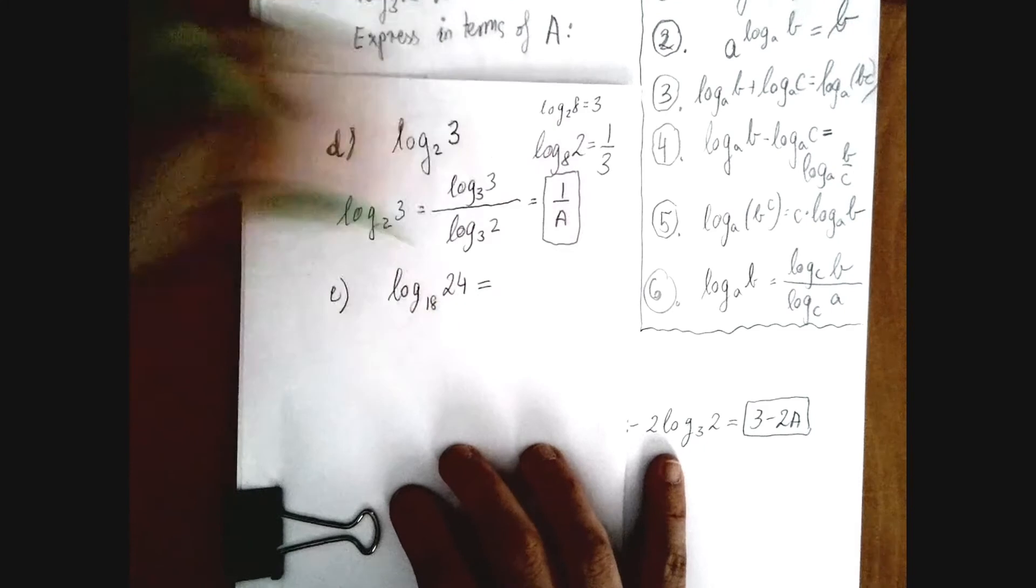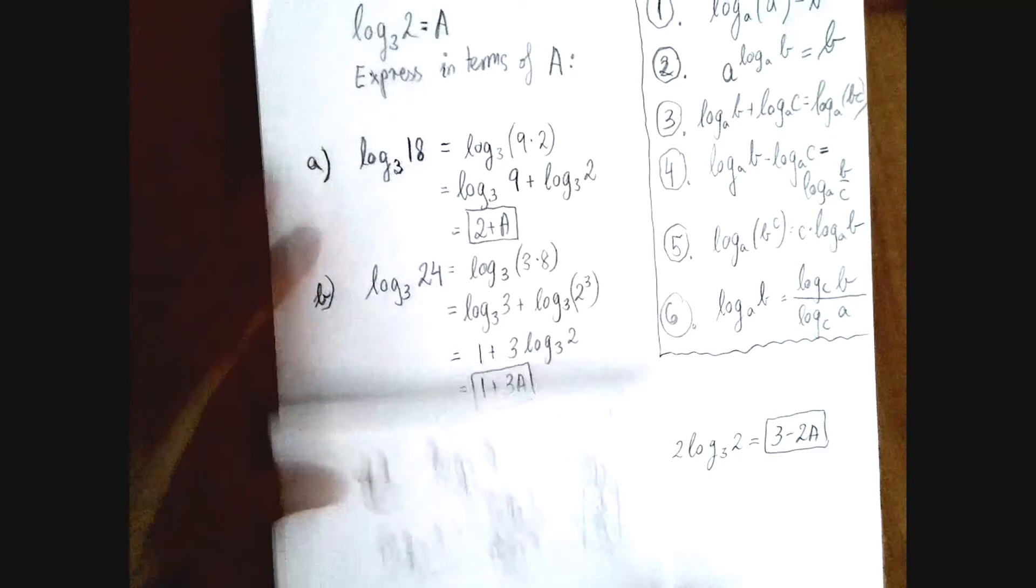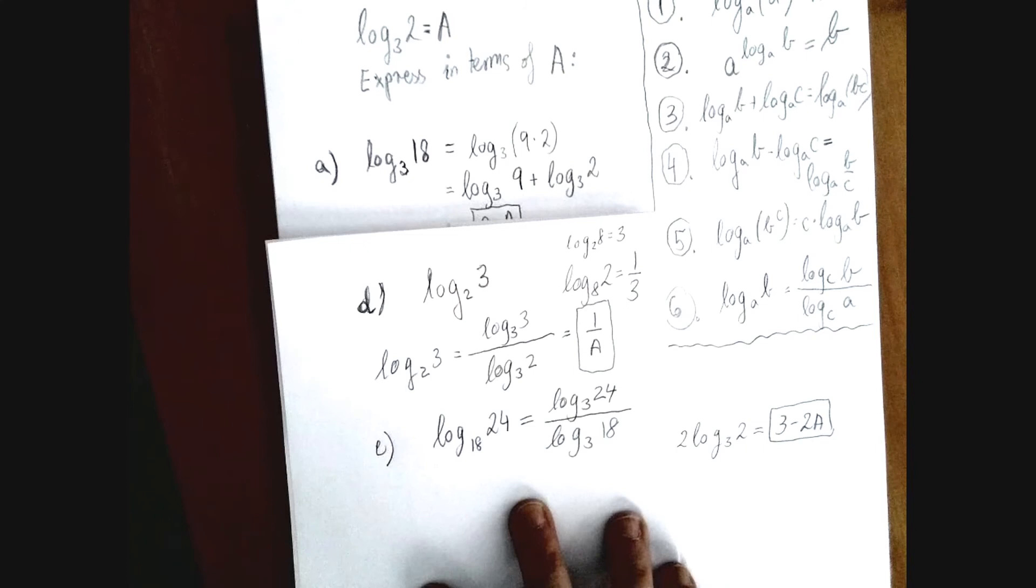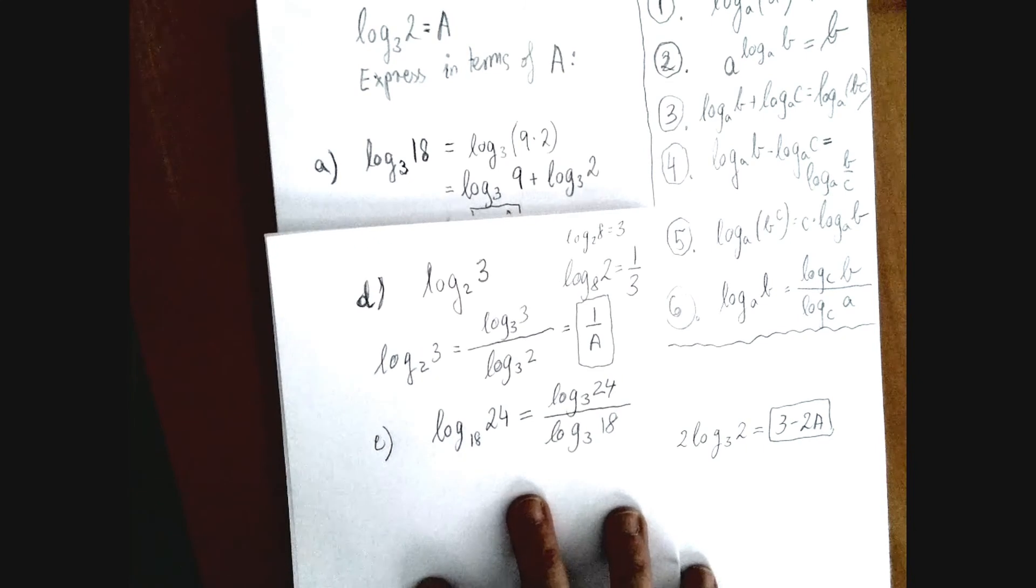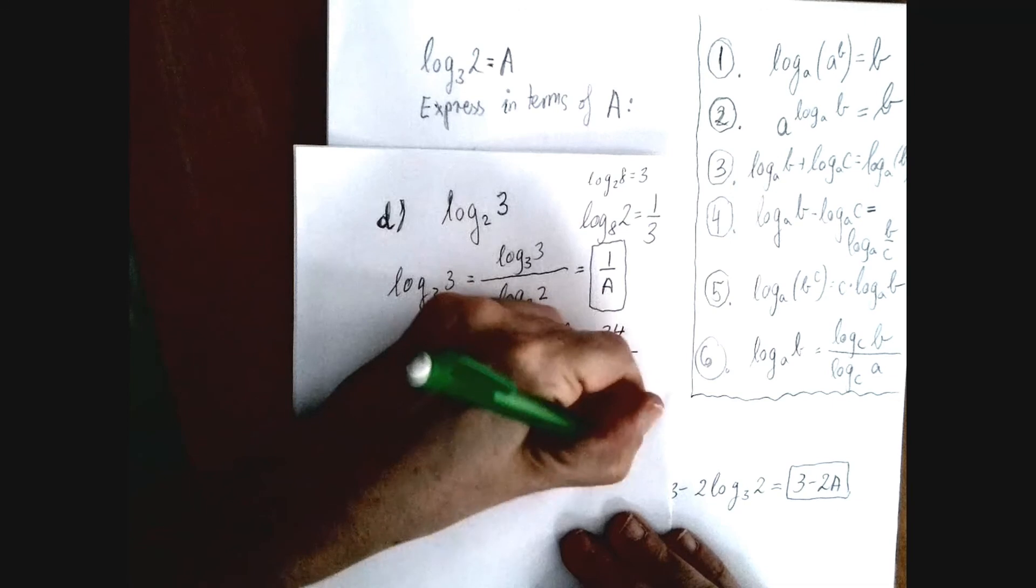Finally, log 18 of 24. Notice that 18 and 24 is something we have seen. So this is a problem that is not very computational if we keep our cool and just remember what we did until now. Using the change of base theorem, we will change to base 3. Log 18 of 24 equals log 3 of 24 divided by log 3 of 18. Those both have worked out. The numerator is 1 plus 3a, or 3a plus 1. The denominator is a plus 2. So that's about it.